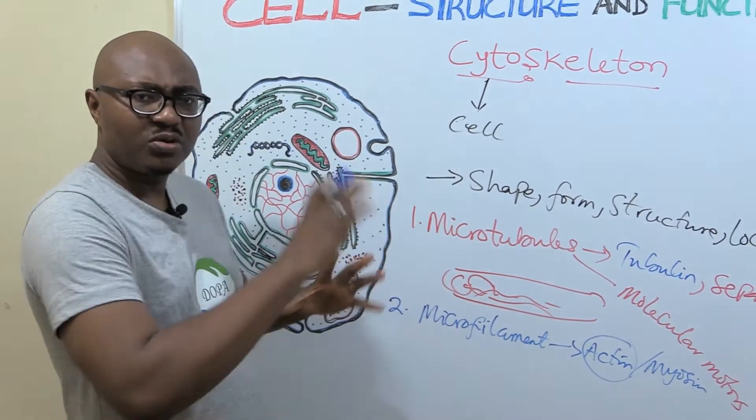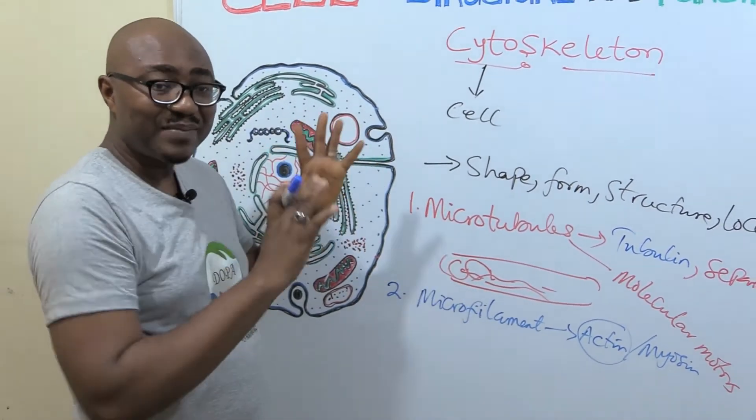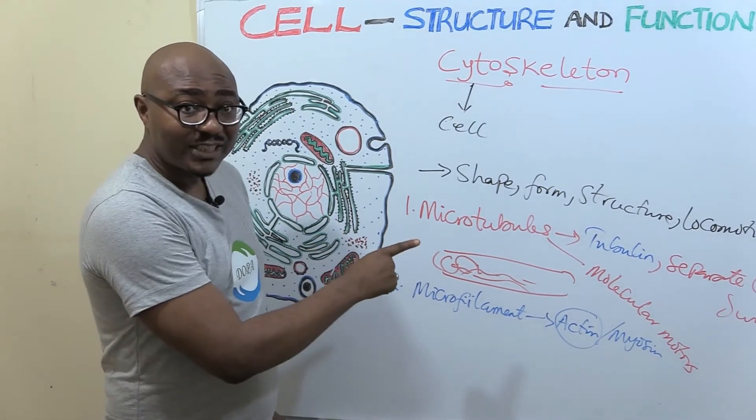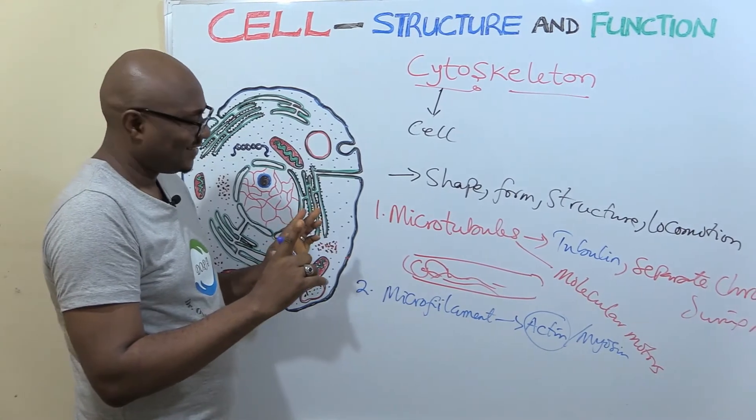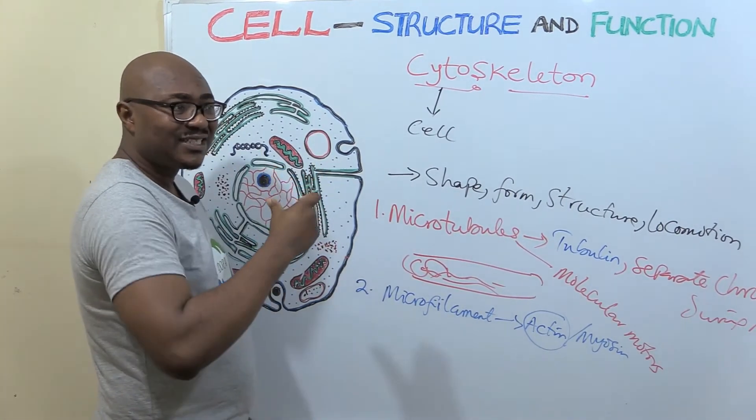So what does actin do? Microfilament, they are all for structure, shape and all of that. Its own specialty is for change of shape.